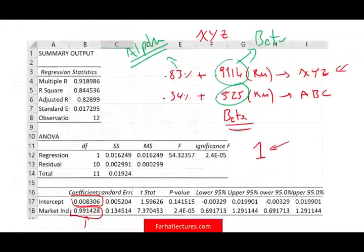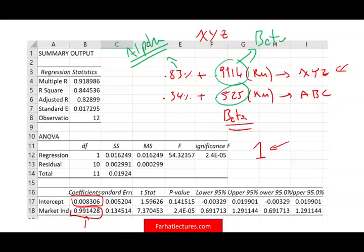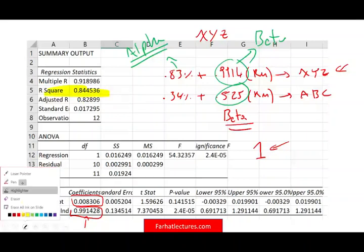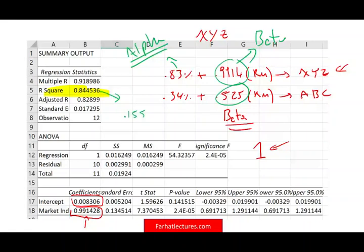Let's take a look at XYZ. XYZ is 0.844. Well, it means the firm specific factor is only 0.155, around 15%. Because if this is 85%, what's left is 15%. Well, this makes sense because XYZ, we said it moves with the market.